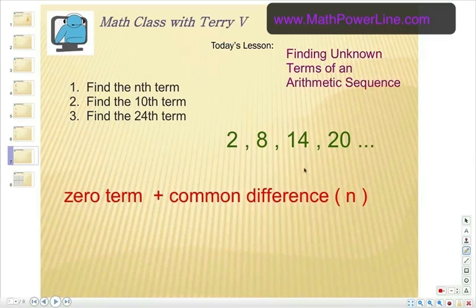Well actually we're going to have to start with the common difference. That will help us find the zero term. What's happening? Well, it looks like we're adding 6 there, and 6 there, and 6 there.